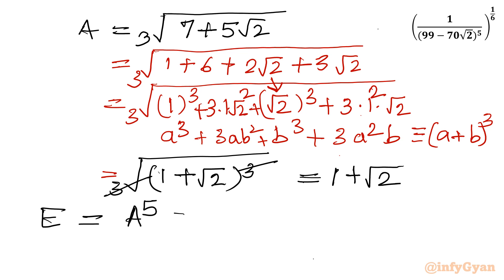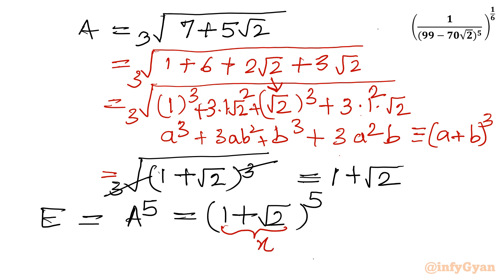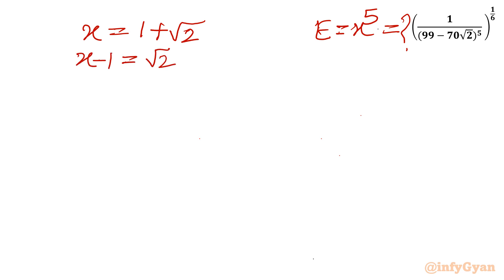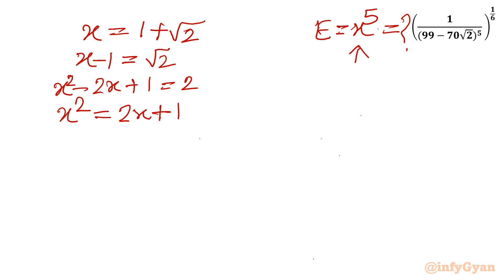So our expression E equals (1 plus √2) power 5. Let x equal 1 plus √2. We have to find x power 5. I will write x minus 1 equals √2. Squaring both sides: x² minus 2x plus 1 equals 2, so x² equals 2x plus 1. Keeping x² on the LHS, the remaining goes to RHS: x² equals 2x plus 1. Now since our requirement is x power 5, I will consider squaring again.